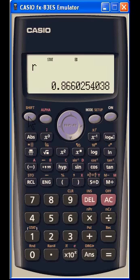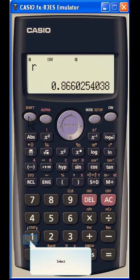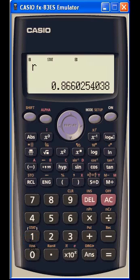If your answer doesn't lie within this range there is something wrong with your calculations. That is really the end of the demonstration as we have calculated our value R, the correlation coefficient.